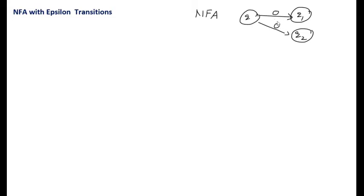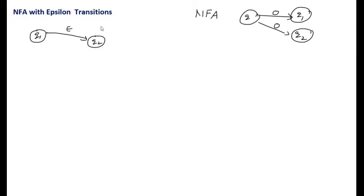This session is about NFA with Epsilon transitions. In an NFA, on reading an input symbol from a state q, it is possible to move to multiple states — for example, q on 0 can move to either q1 or q2. In an NFA with Epsilon transitions, there is an edge labeled epsilon from a state q1 to q2, meaning without reading any input symbol, it can move from q1 to q2. This is another mechanism that allows an NFA to be in multiple states at once.